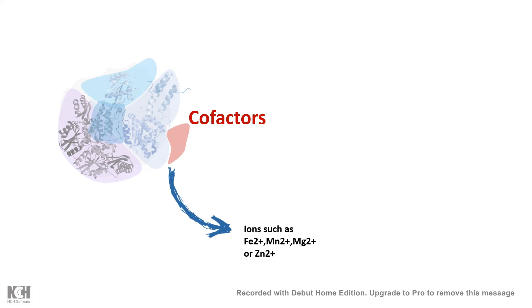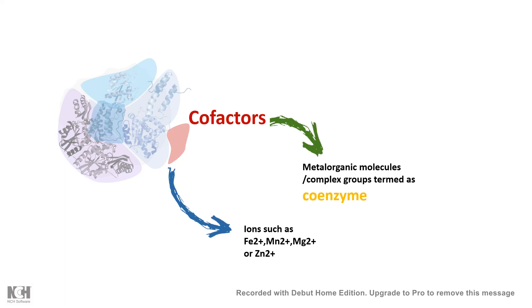These cofactors of enzymes could be of different kinds. Either they could be metal ions like ferrous ions, manganese ions, magnesium, or zinc, etc. Or these cofactors could be relatively complex organometallic compounds or complex organic groups, which are known as coenzymes. So we can clearly delineate two different species of cofactors: relatively simple metal ions, and relatively complex organic groups or organometallic compounds, which we term coenzymes.